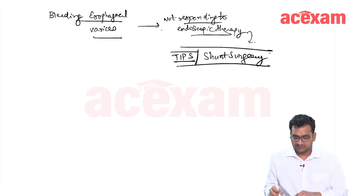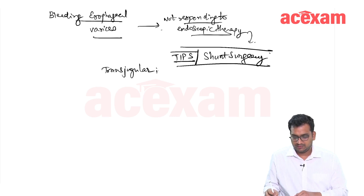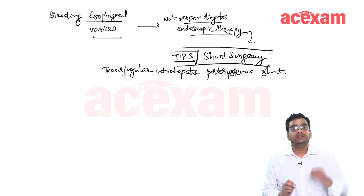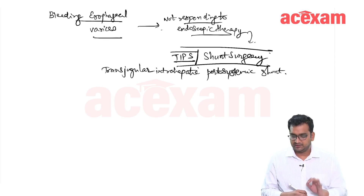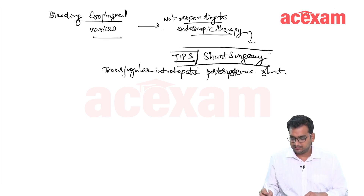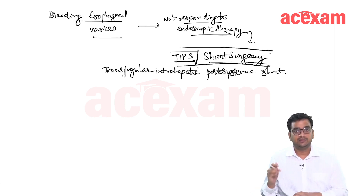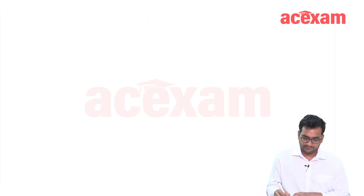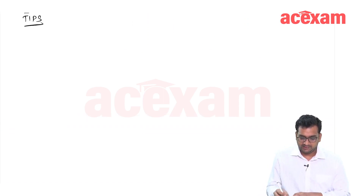TIPS is also a type of shunt. It stands for transjugular intrahepatic portosystemic shunt. This is done radiologically by an interventional radiologist, and it is another way of performing a shunt. The first topic we will discuss is TIPS.